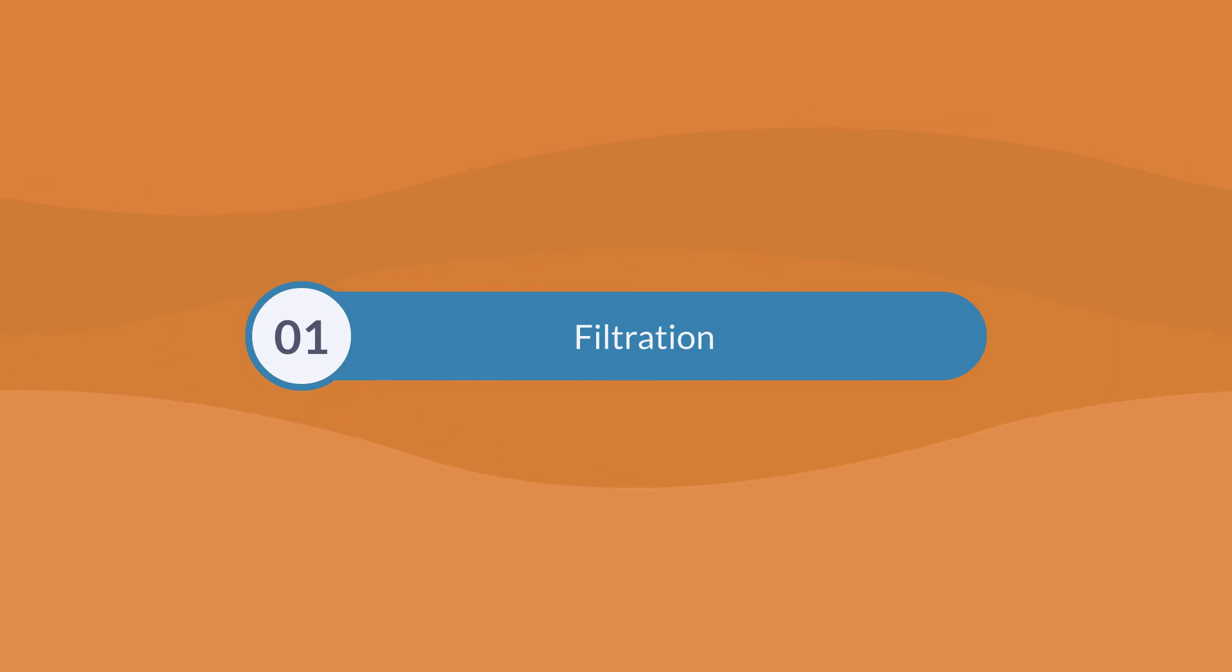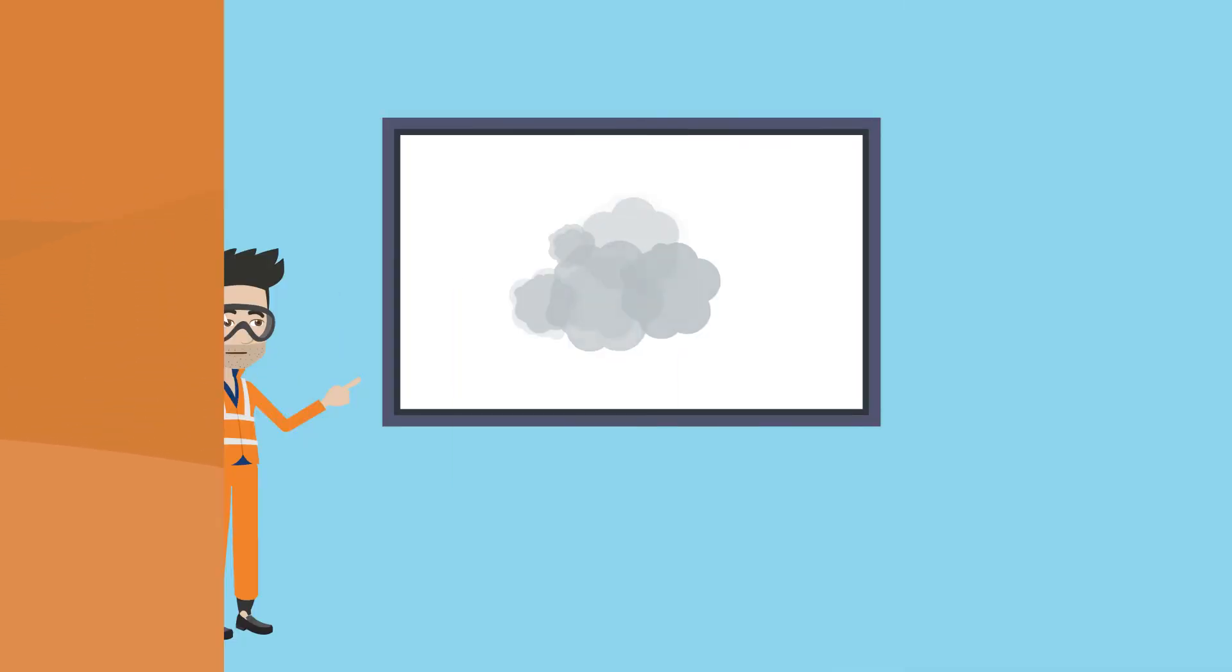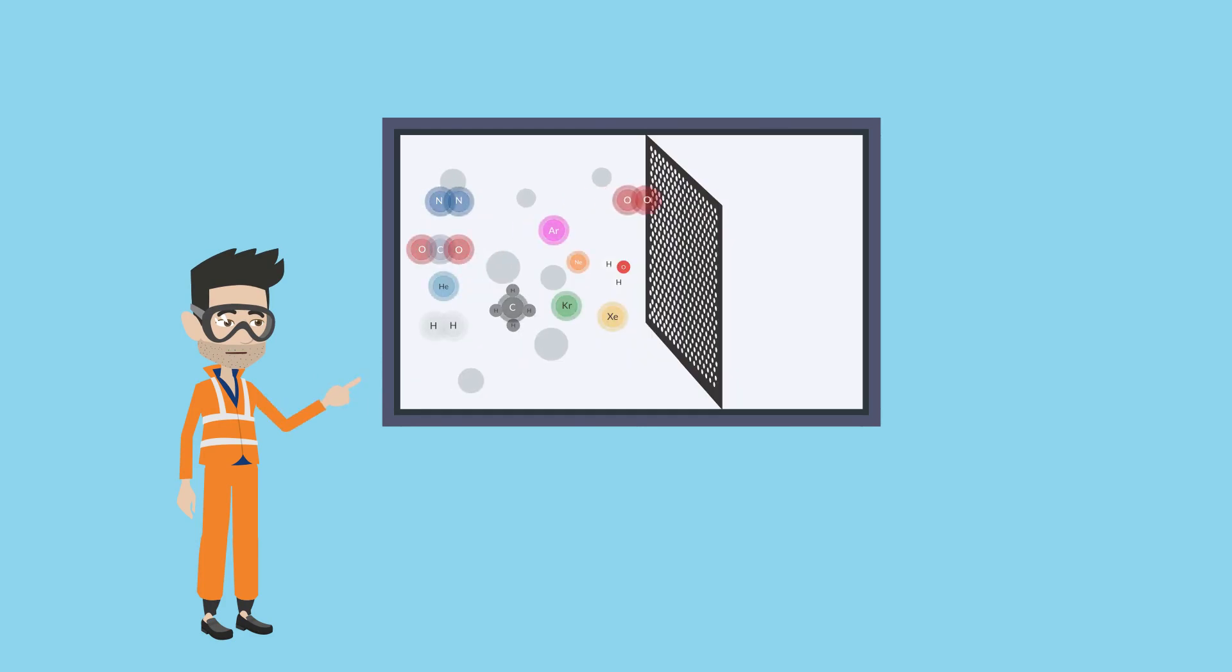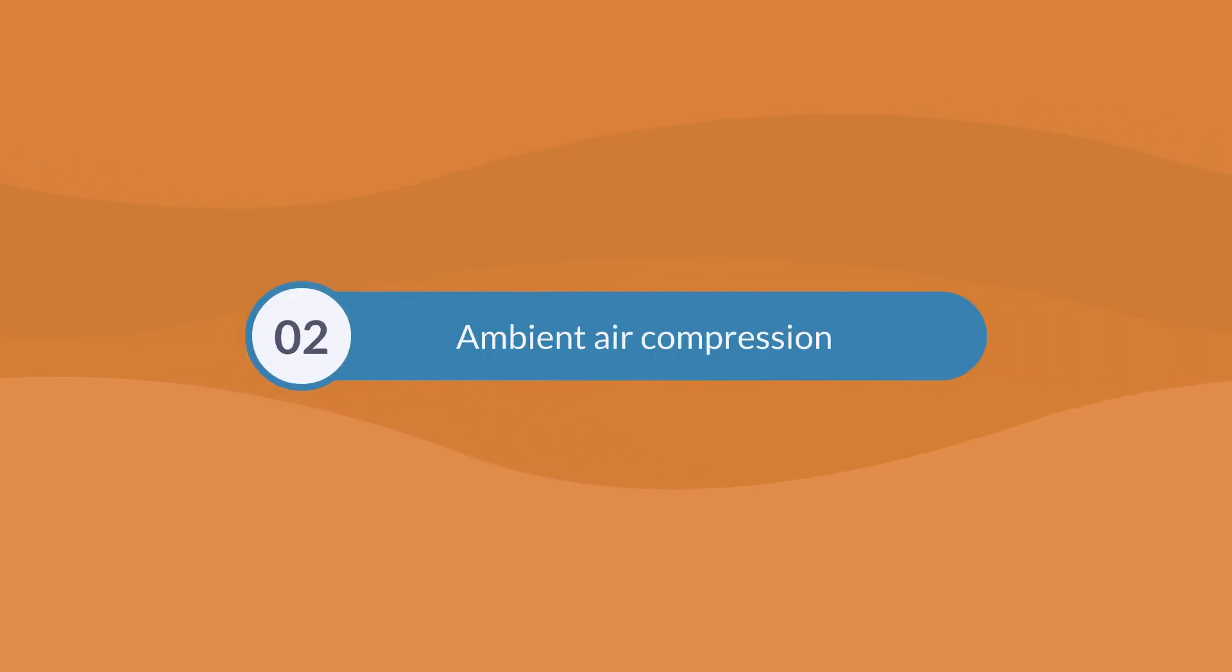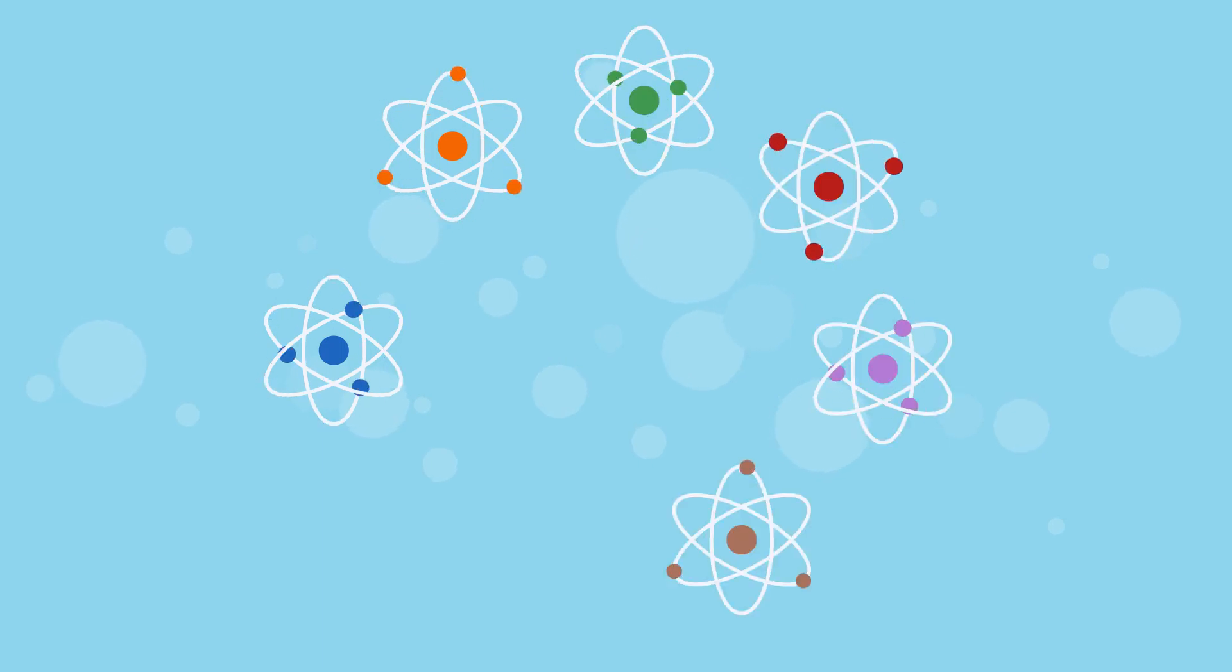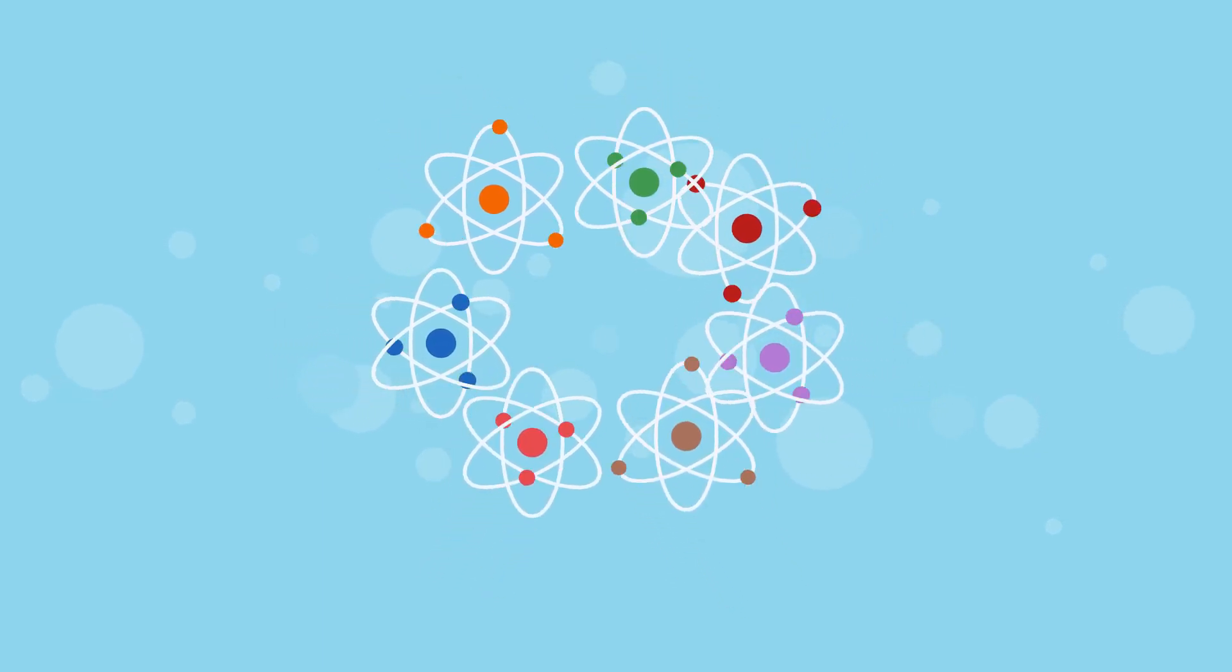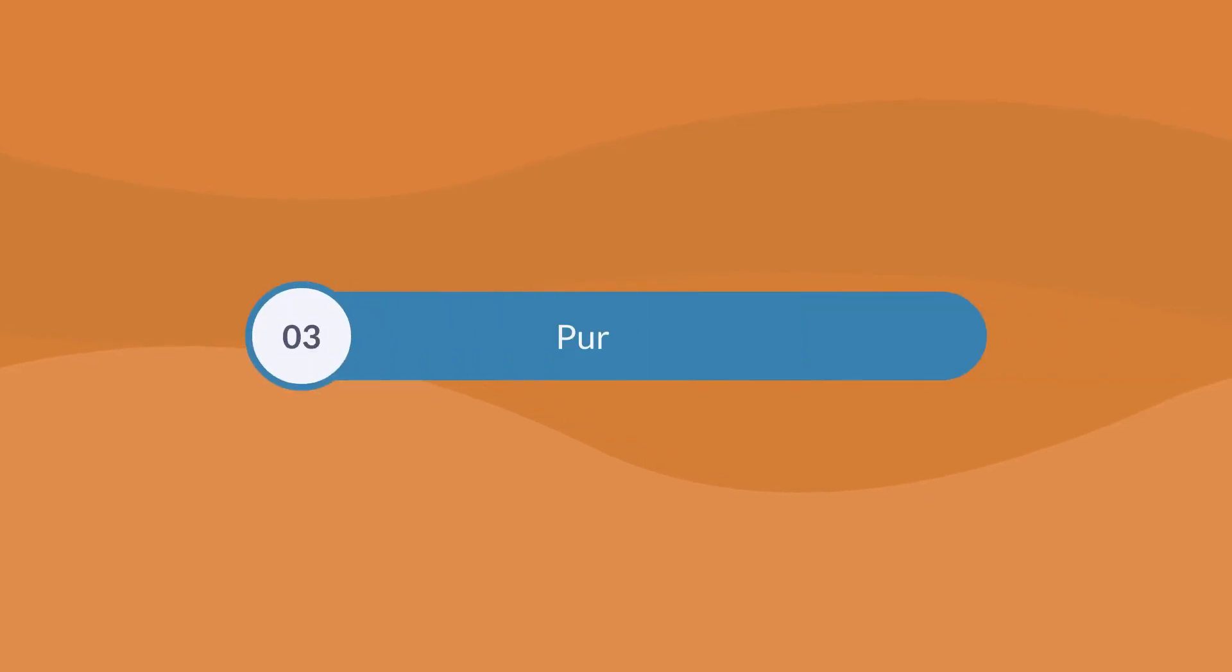Step 1 – Filtration: Air from the atmosphere often contains impurities. Air is purified through a filter that removes any particles of dust. Step 2 – Ambient Air Compression: Air is compressed to 6 bar to prepare the air for separation.